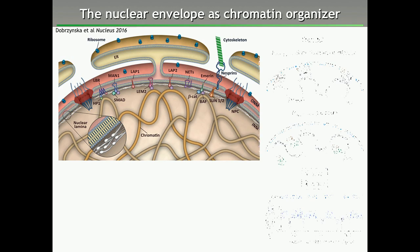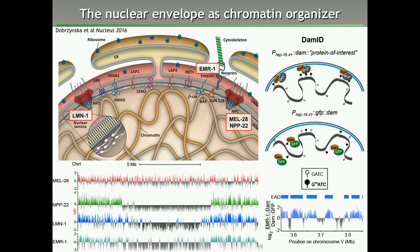To understand how the nuclear envelope is involved in chromatin organization, we use a method called DAM-ID. Briefly, we fuse the protein we want to study with DAM-methylase from E. coli, and then through a series of enzymatic reactions we can identify the chromatin that has been in contact with the protein. We study several different proteins of the nuclear envelope, including Emerin.